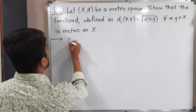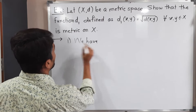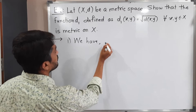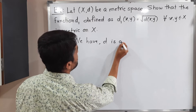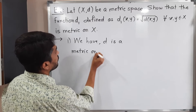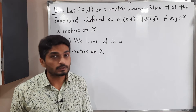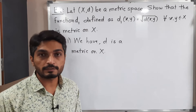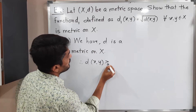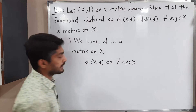We have d is a metric on X, so d satisfies all four properties. Therefore it satisfies the first property also — d(x,y) is greater than or equal to 0 for all x, y belonging to capital X.